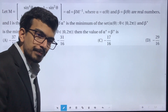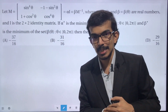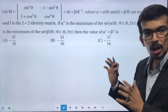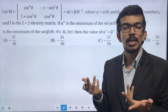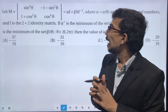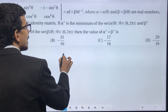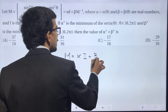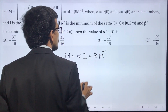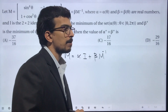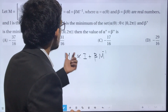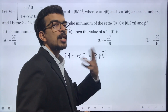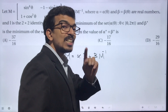This question is from JEE Advanced 2019. We have a matrix M where all entries are functions of θ, and M is represented as M = αI + βM⁻¹. From this expression we are supposed to find α and β as functions of θ — that is the first part of the question.